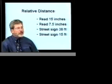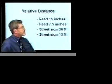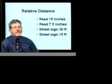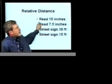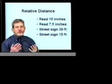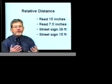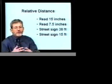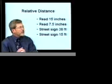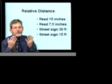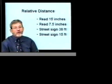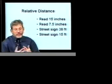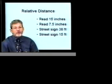The next type is called relative distance magnification. If you are reading the newspaper at 15 inches, which is approximately the distance at which most of us read, and then you bring that newspaper to 7 and a half inches, you are going to be doubling the magnification — two times magnification — because you've cut the distance in half.